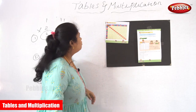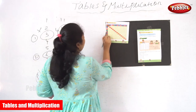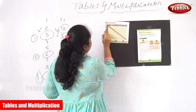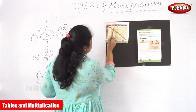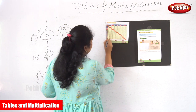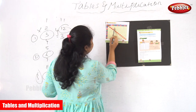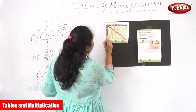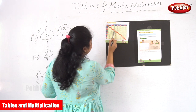Next we are going to see about the fourth table. 4 into 0 is 0. 4 into 1 is 4. 4 into 3 is 12.